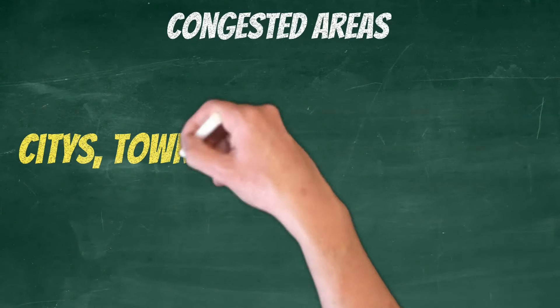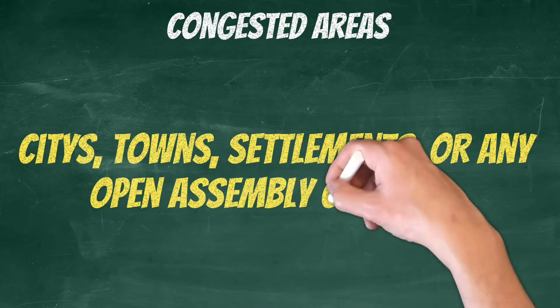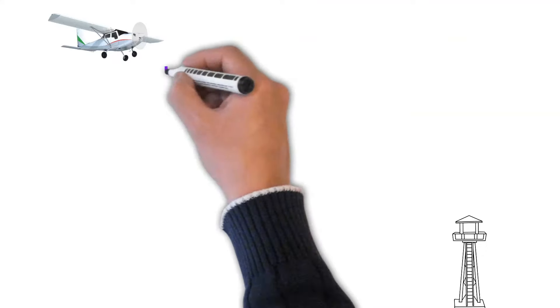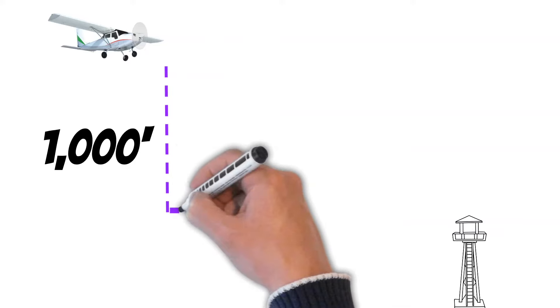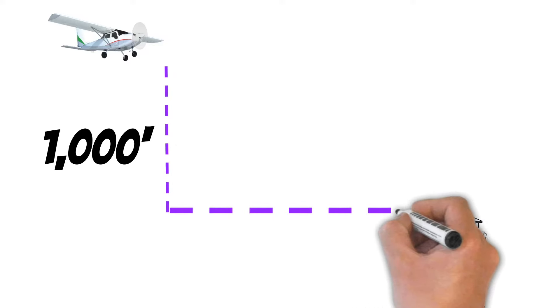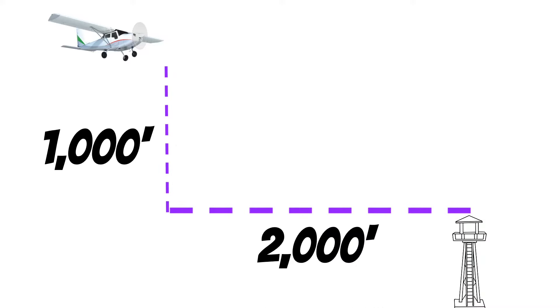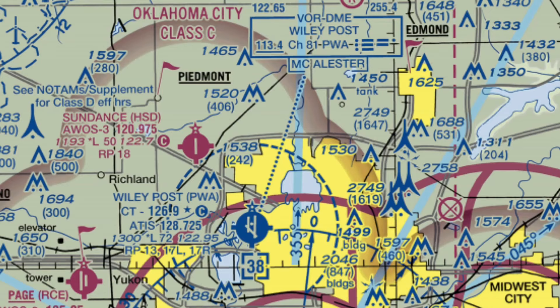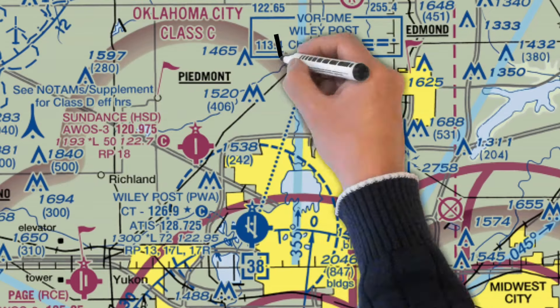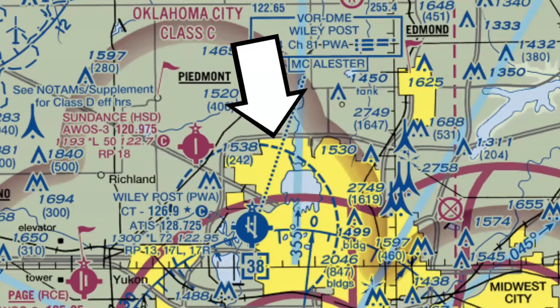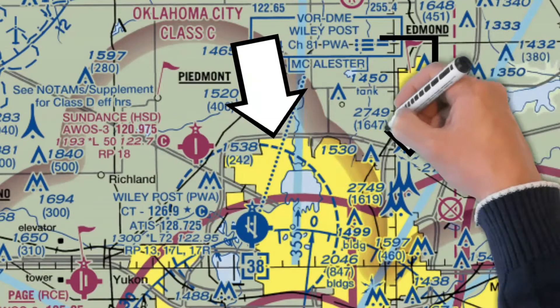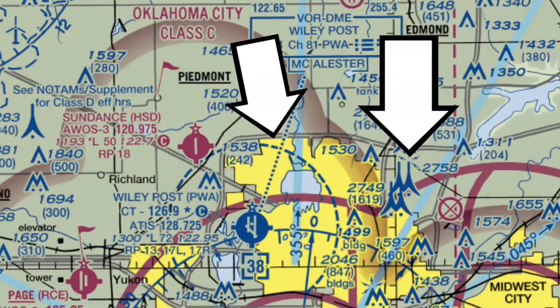Then we have congested areas, which are simply cities, towns, settlements, or any open assembly of people. In these areas, you need to keep your airplane 1,000 feet above the highest obstacle within a 2,000 foot radius of the aircraft. On the test they'll tell you whether you're in a congested or uncongested area, but in real life, if I'm anywhere near the yellow areas on the map, I'm going to call that area congested.